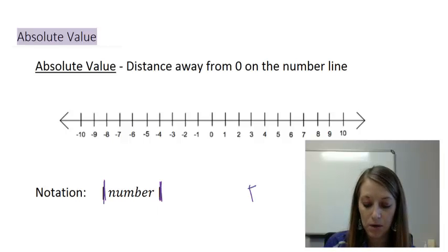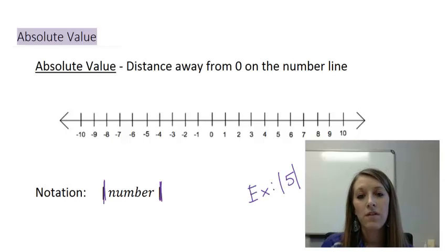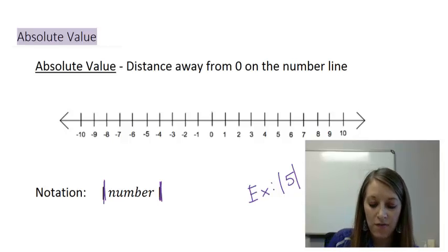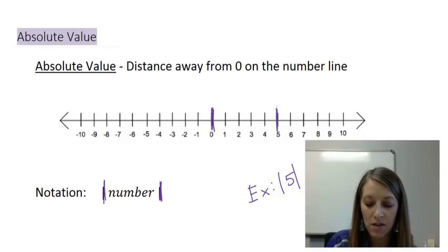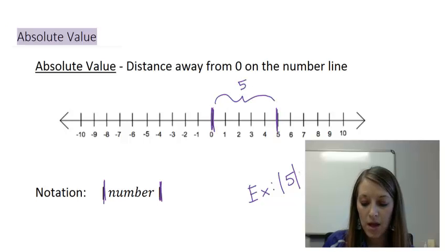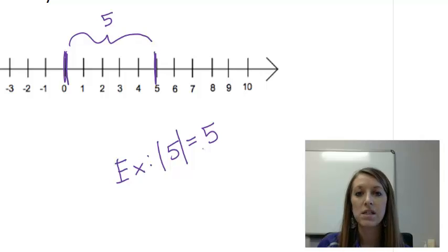For a quick example: if I wanted to find the absolute value of 5, that means I want to figure out the distance between 0 and 5 on the number line. If I find 0 on the number line and I find 5 on the number line, I want to calculate their distance, which is 5 units away. So the absolute value of 5 is 5.